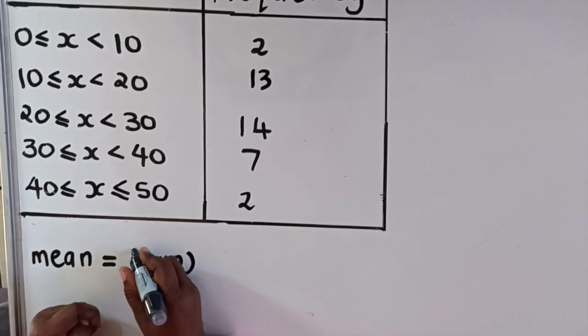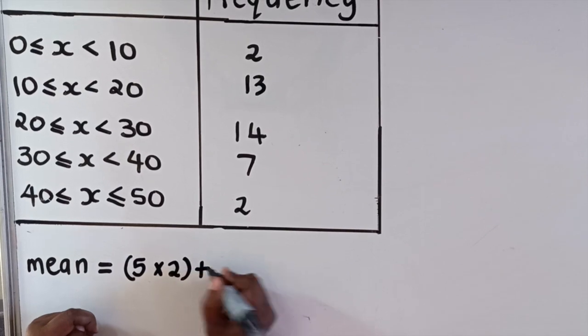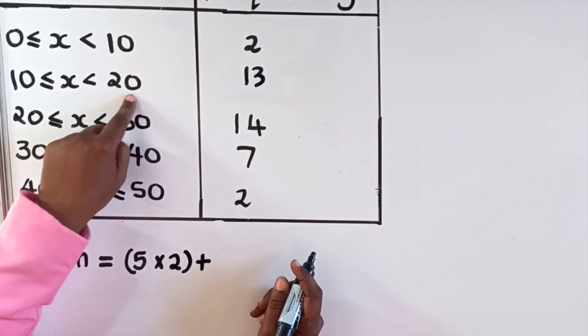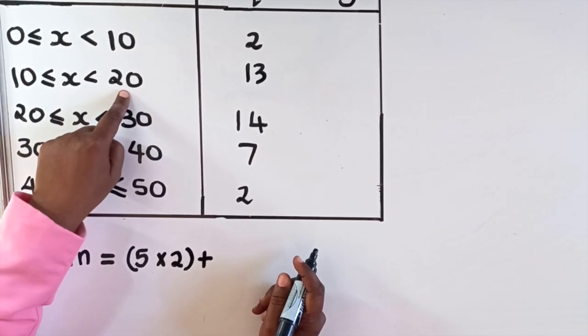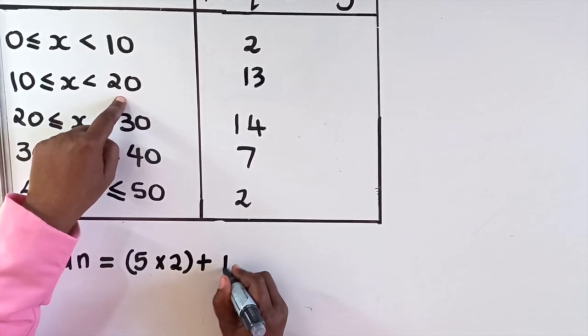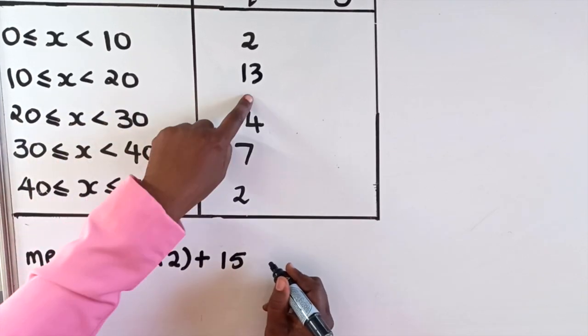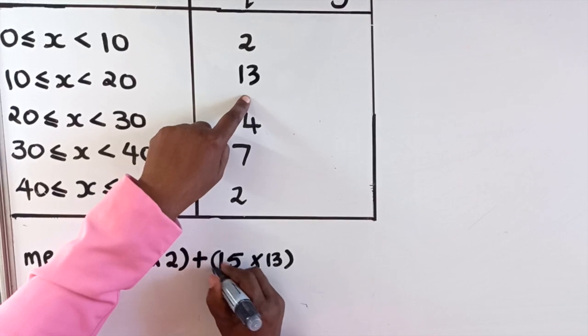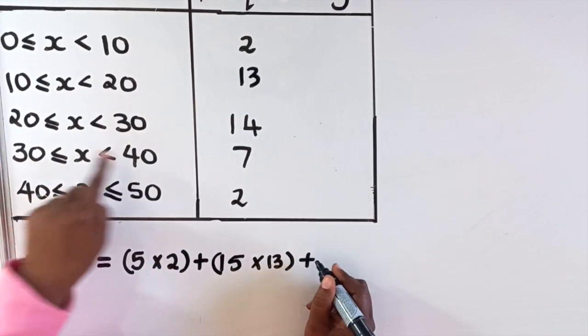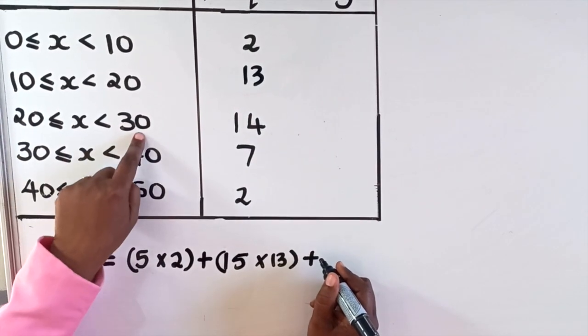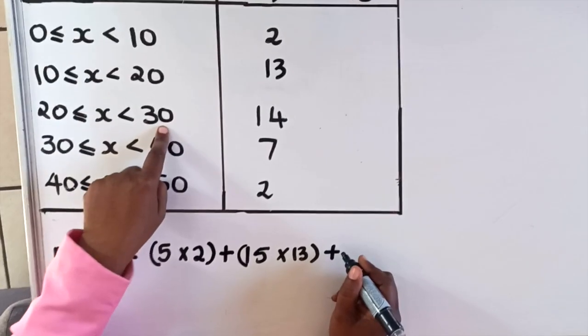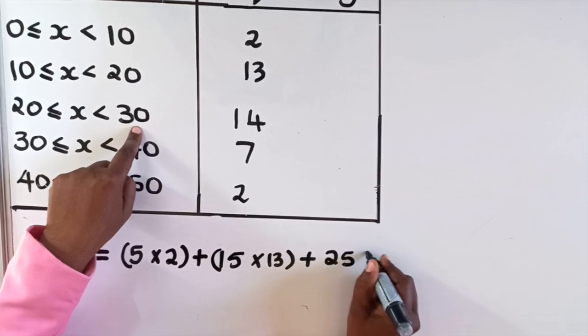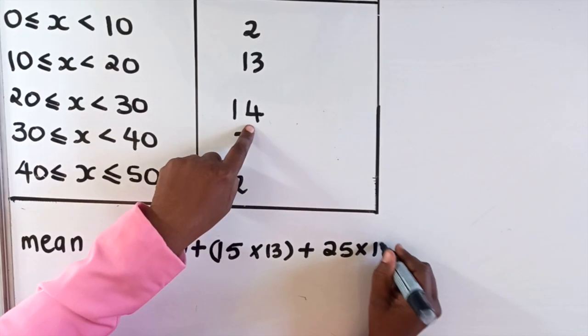Then you add the next intervals. 10 plus 20 is 30 divided by 2, which is 15, multiplied by the frequency 13. Then add the next interval: 20 plus 30 is 50, 50 divided by 2 is 25, times the frequency 14.